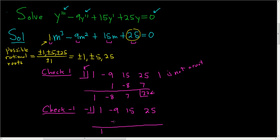1 times negative 1 is negative 1. If we add, we get negative 10. Negative 10 times negative 1 is 10. If we add, we get 25. And 25 times negative 1 is negative 25. We add, we get 0. We can rejoice because this means that m equals negative 1, this guy is a root.